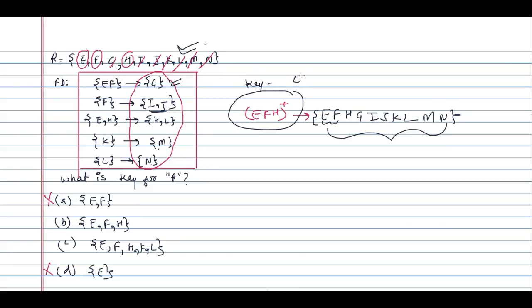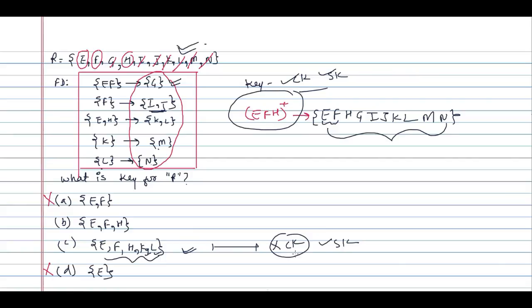EFH is a candidate key as well as a super key. Now if you take EFHKL, you can also determine all attributes, but it is not a candidate key — it is only a super key, because even without K and L, the proper subset EFH can determine everything. Therefore the answer is option B.